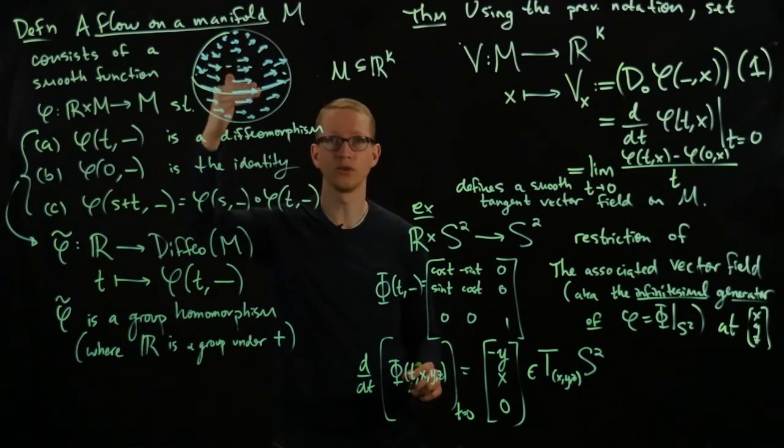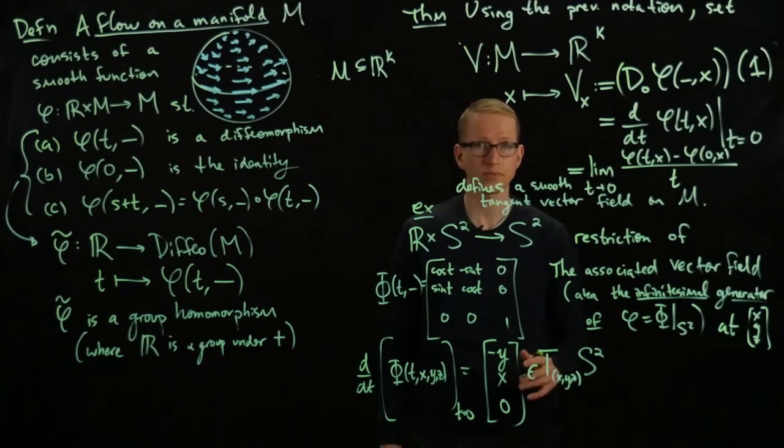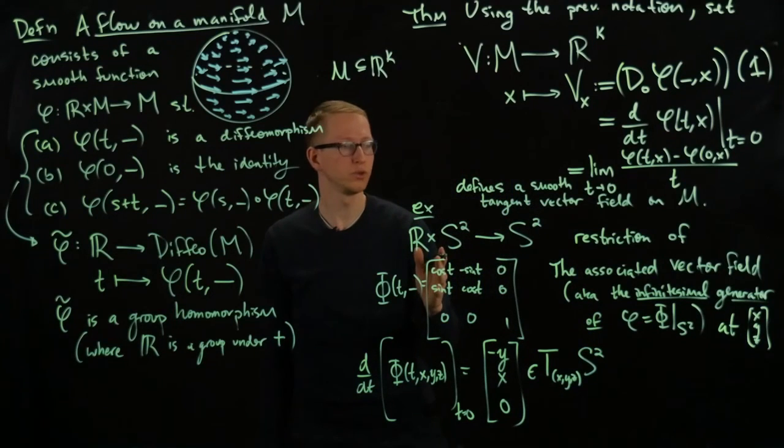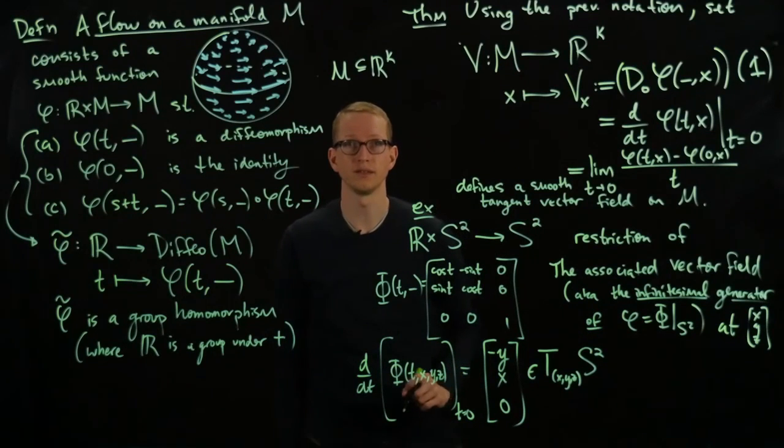And again, as you go to the equator, that's when it's the largest, and again, smaller as you go to the south pole. And so this actually gives us a flow on S², whose infinitesimal generator is given by the vector field obtained in this fashion.